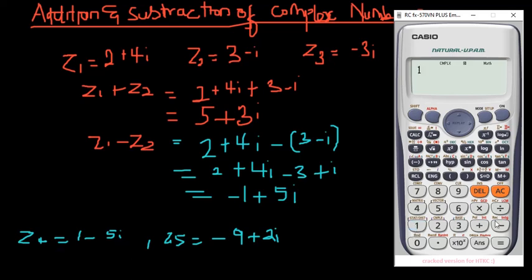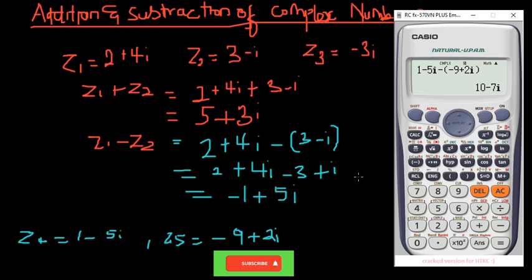To subtract, enter one minus five i, minus open bracket negative nine plus two i, close bracket — and there we go. That brings us to the end of addition and subtraction of complex numbers. You can solve lots and lots of questions with these methods. I'll see you in the next video where we'll be treating conjugate complex numbers and division of complex numbers. Bye bye!